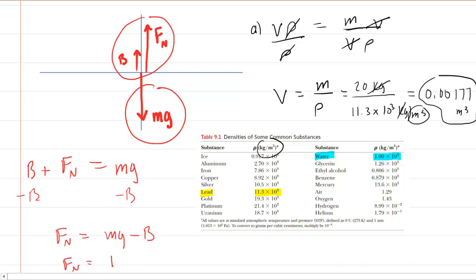We determined the weight to be 196 newtons, and the buoyant force was the 17.3 newtons. So when we subtract these, we're going to get about 178.7 newtons. That would be the correct answer for part D.